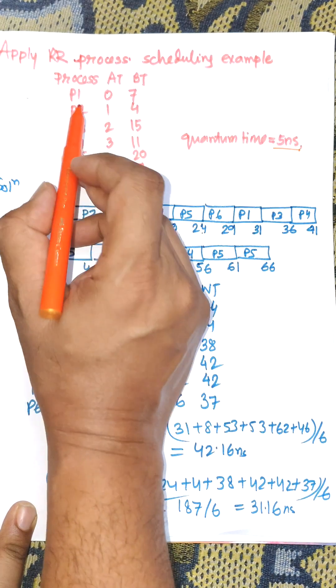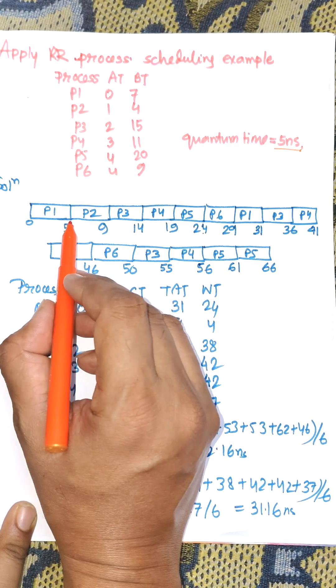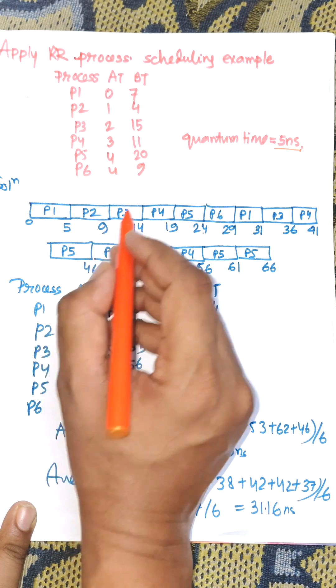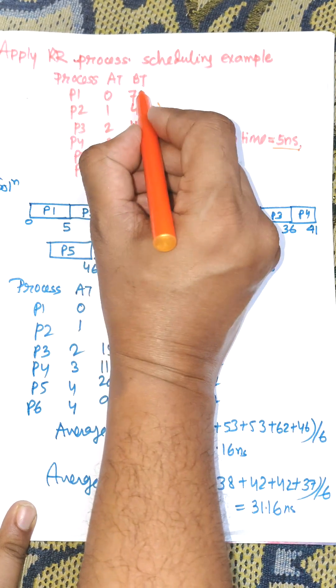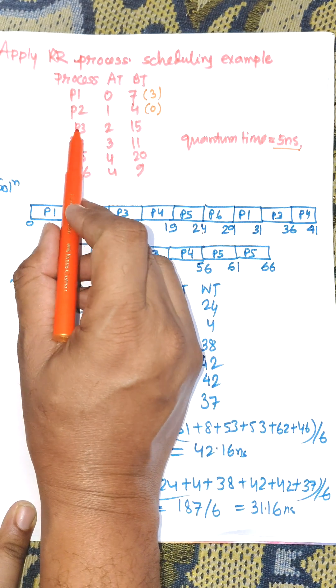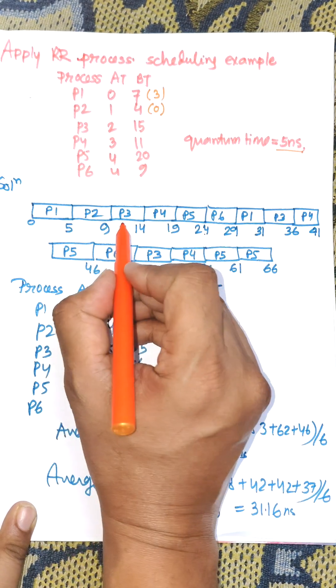P2 arrives at 1, so P2 will be executed from 5 to 9. P2 completes, taking 4 nanoseconds. Remaining time for P1 is 3. Now control goes to the next arrival time, P3, and it will execute.